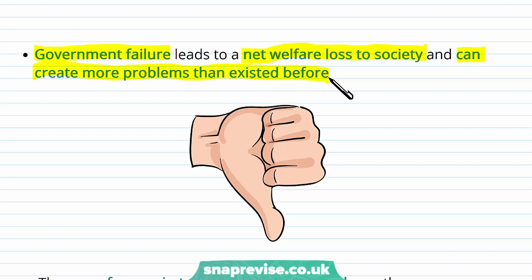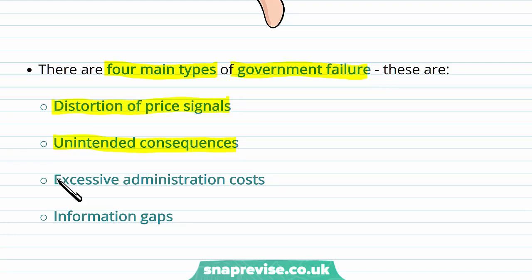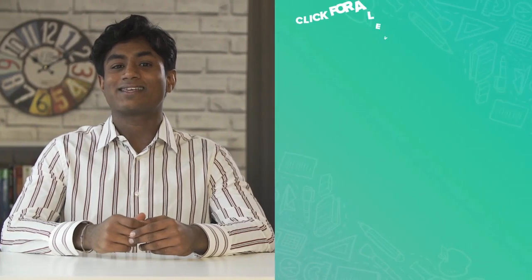So government failure is when they end up increasing the amount of net welfare loss as a result of their intervention when they are trying to correct market failure. There are four main types of government failure: distortion of price signals, unintended consequences, excessive administration costs, and information gaps.